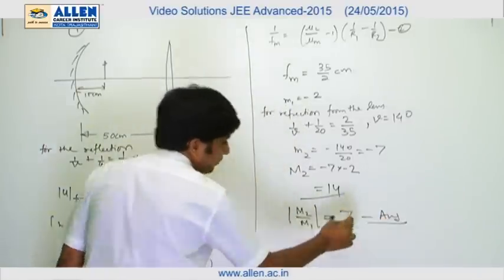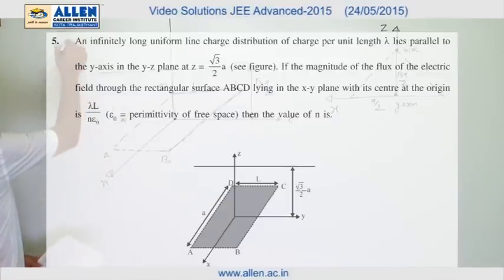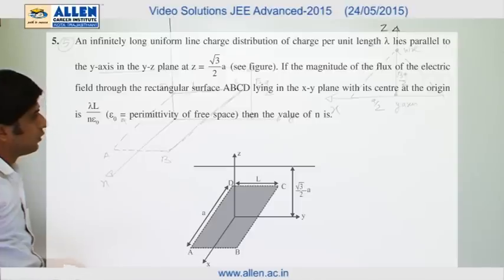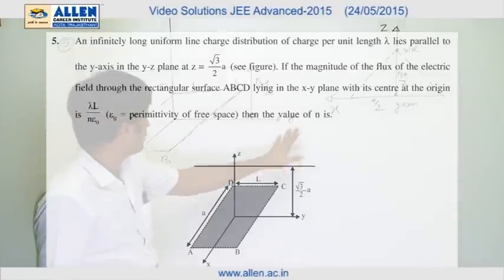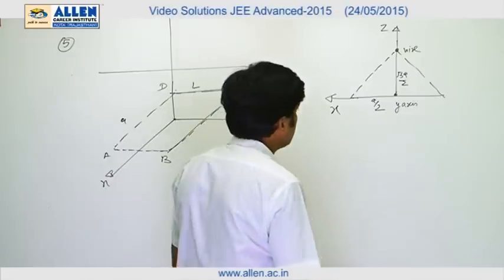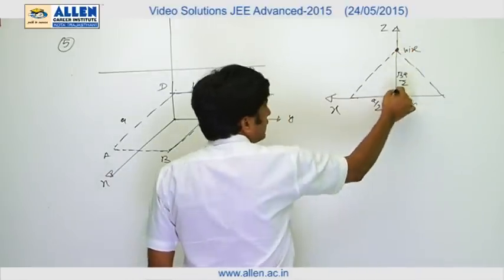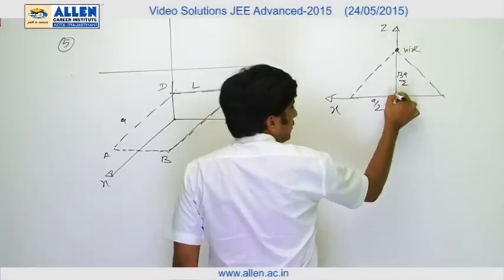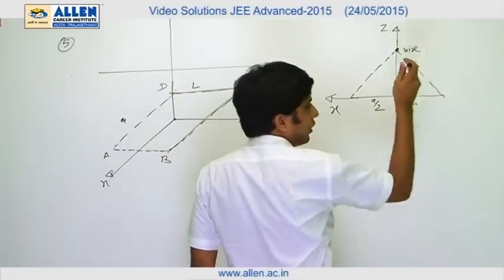And the question number 5, this question can be solved by considering symmetry of the question. So if we see the diagram from positive y-axis towards negative y-axis, we will get the situation in which this is the wire, this is z-axis, and this is y-axis coming out of the board, and this is x-axis.